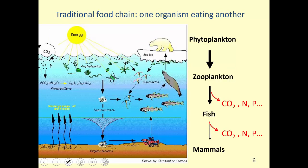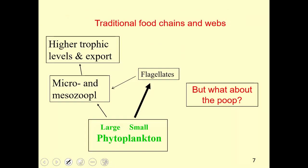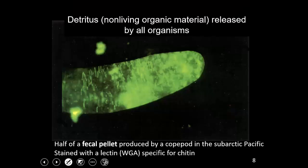That's the zooplankton community. Now we're going to talk about another fate of primary production — the microbial loop. But first, let's review how the microbial loop differs from the traditional food chain, which consists basically of one organism eating another, with organisms excreting inorganic nutrients taken up by phytoplankton. The question is: what happens to the organic material released by all these organisms — the poop? Here's one example: a fecal pellet produced by a copepod from the subarctic Pacific, stained with a lectin that binds to polysaccharides specific for chitin.